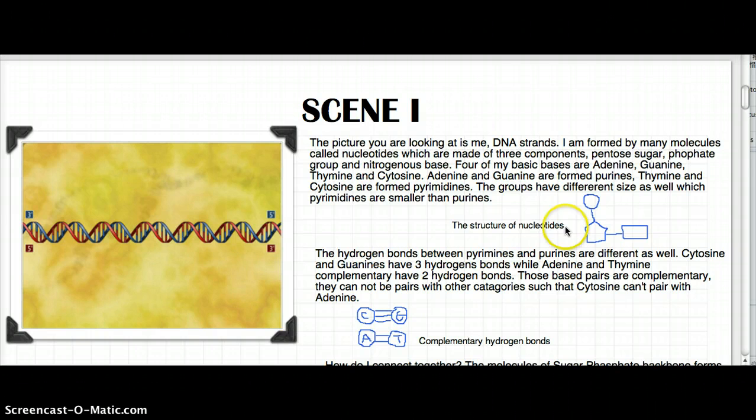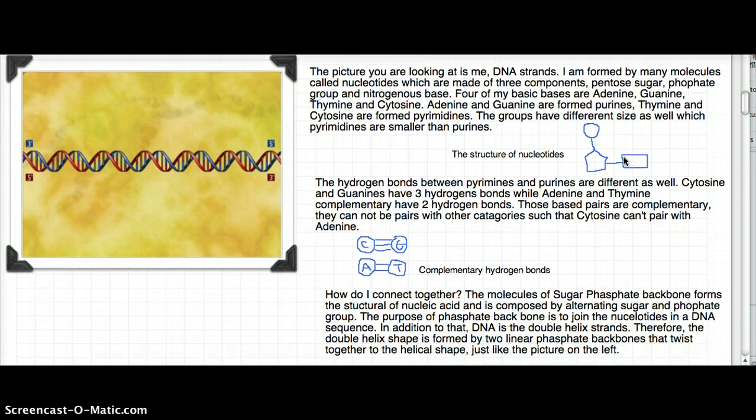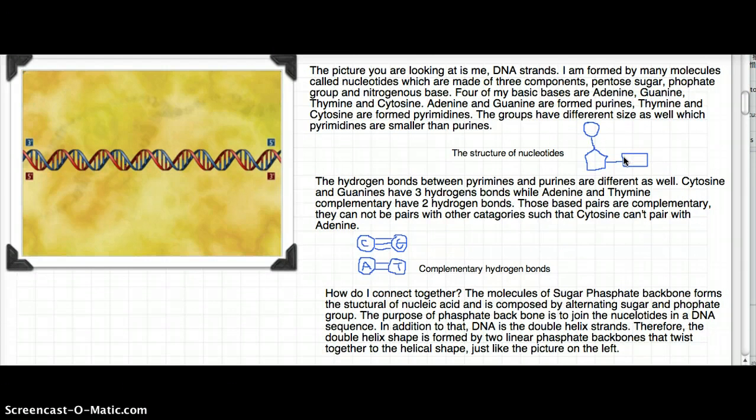The picture I drew here is the structure of nucleotides. The hydrogen bonds between them are also different. As the picture shows, C and G have three hydrogen bonds, and A and T have two hydrogen bonds.